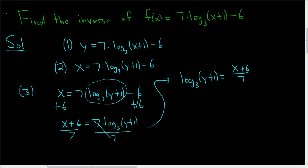Now this is a formula we can use. If you recall, b to the log base b of x is equal to x. So in our case, 3 to the log base 3 of x would be equal to x. So we will exponentiate both sides — put a 3 here and a 3 here.